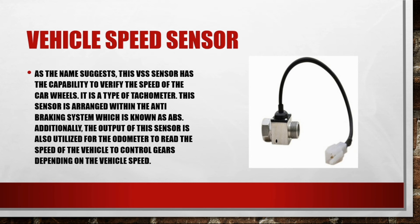The vehicle speed sensor (VSS), as the name suggests, has the capability to verify the speed of the car wheels. It is a type of tachometer arranged within the anti-braking system (ABS). The output of this sensor is also utilized by the odometer to read the speed of the vehicle and to control gears depending on the vehicle speed.